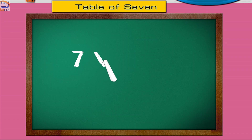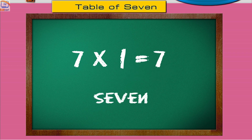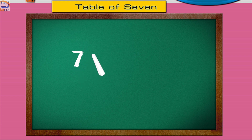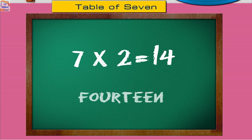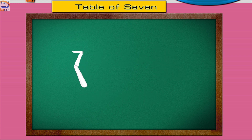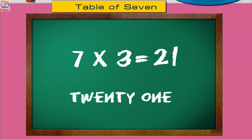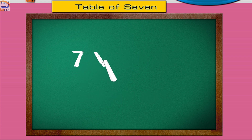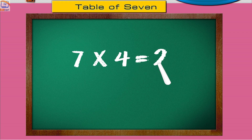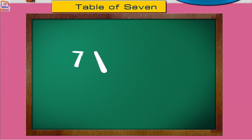Seven ones are seven. Seven twos are fourteen. Seven threes are twenty-one. Seven fours are twenty-eight. Seven fives are thirty-five.